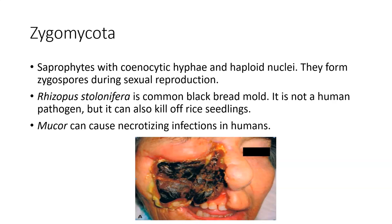If I remember correctly, the woman shown in this picture did not survive this infection. You can see it destroyed her lip, most of her nose, and her eye is gone. That is what your book means when it says necrotizing infection — that picture right there.